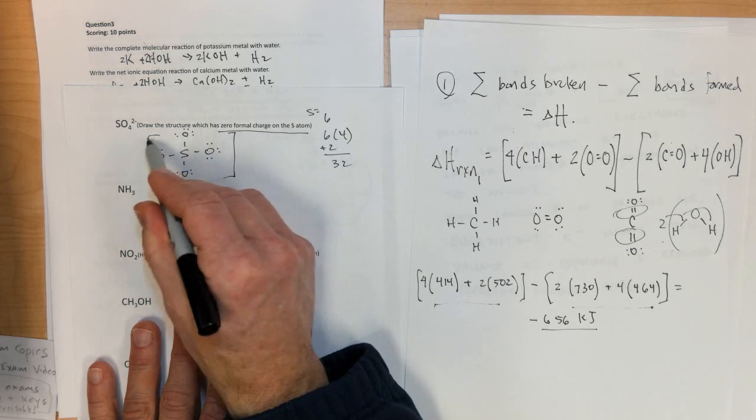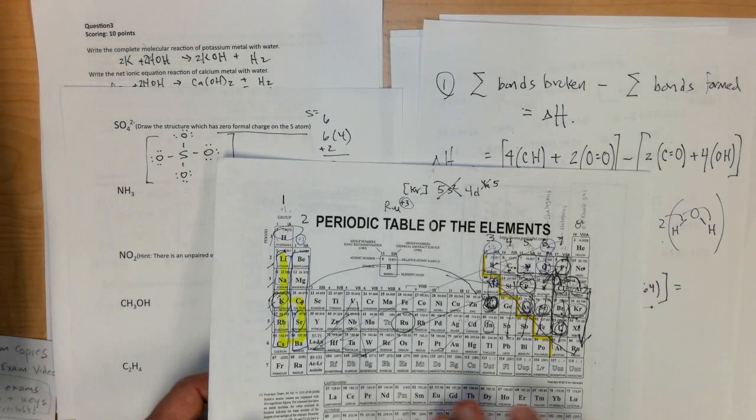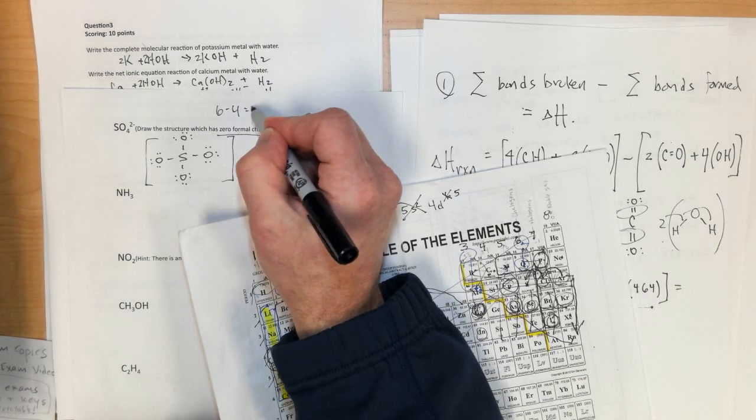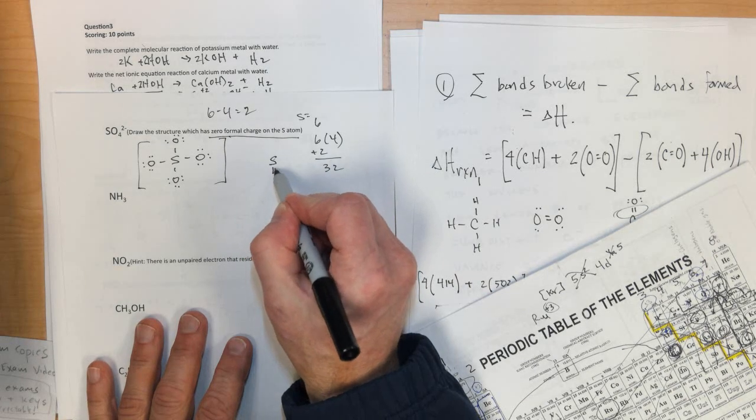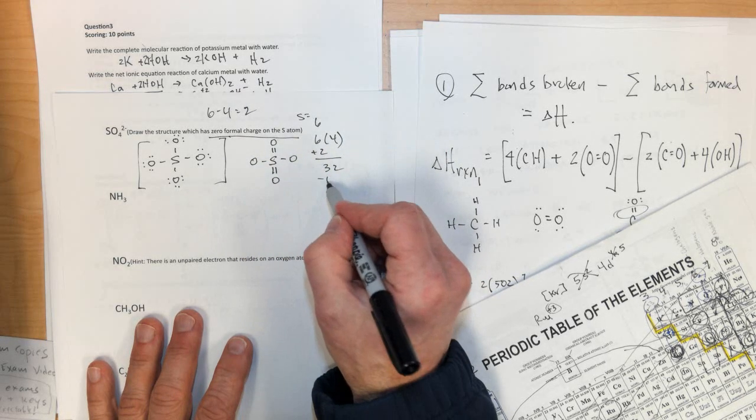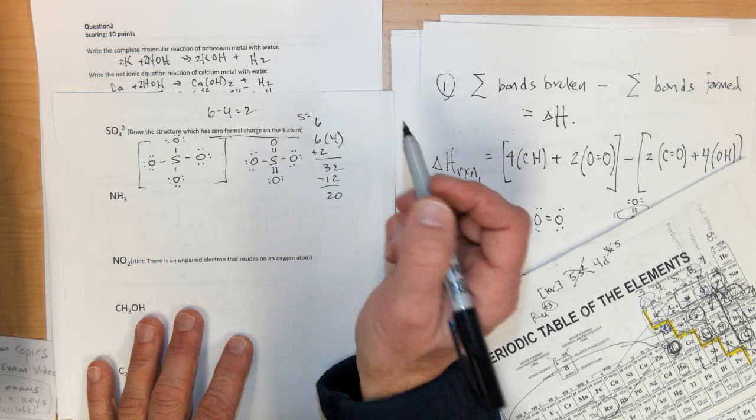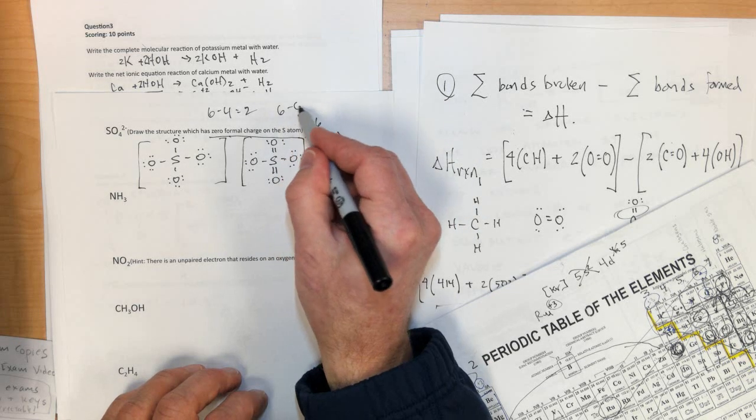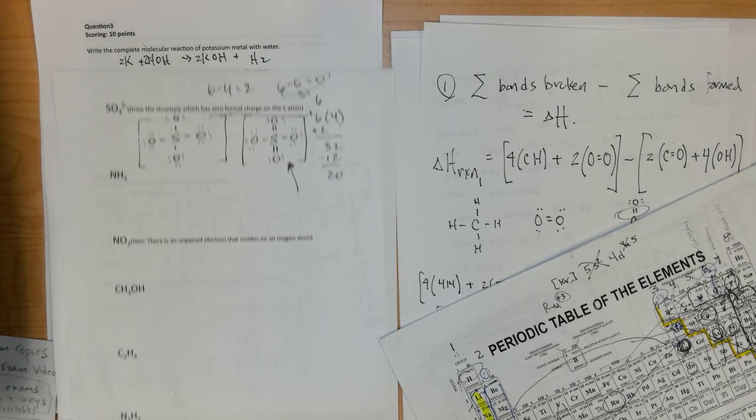Formal charge is not zero for sulfur though. Because sulfur has 6 assigned to it on the periodic table. And it has 1, 2, 3, 4 assigned to it right here. And so it would have a formal charge of 2. To have a zero formal charge on the sulfur, you'd have to end up drawing this structure. Where sulfur is double bonded, double bonded, single bonded, single bonded. We've now used up 2, 4, 6, 8, 10, 12. Which leaves 20 electrons. 2, 4, 6, 8, 10, 12, 14, 16, 18, 20. Now put brackets around it. A minus 2. 1, 2, 3, 4, 5, 6. 6 minus 6 equals 0. Zero formal charge on the sulfur atom. So this would be the more correct one. If we were drawing the one for zero formal charge on sulfur.